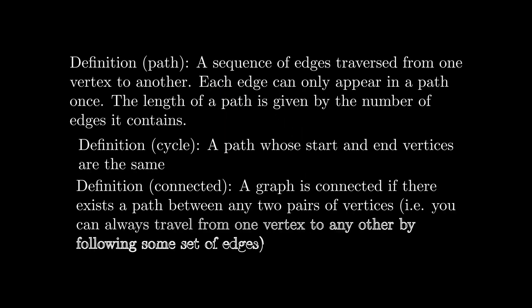A path along a graph refers to a sequence of edges which is traversed from one vertex to another. Each edge can only be traversed once along a given path, meaning that we cannot repeat edges. The length of a path is simply given by the number of edges traversed. A path which starts and ends at the same vertex is known as a cycle.